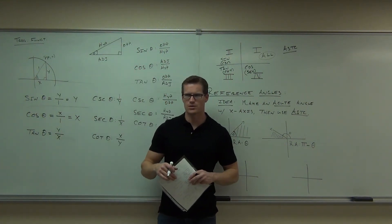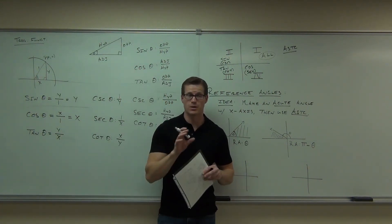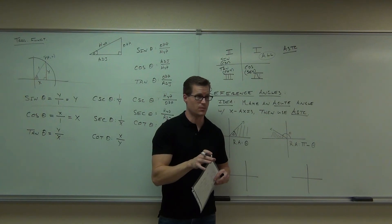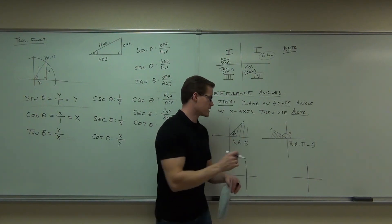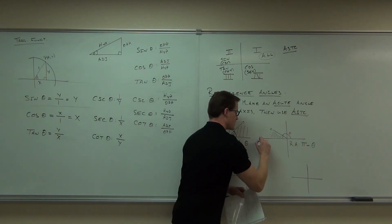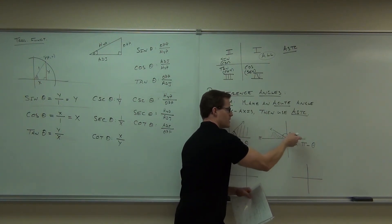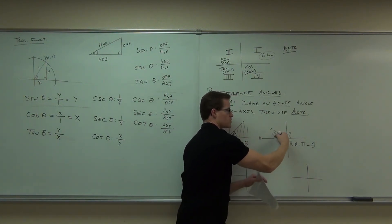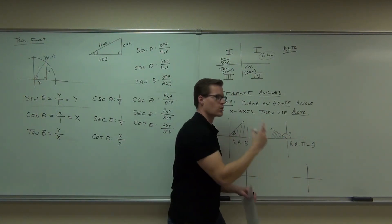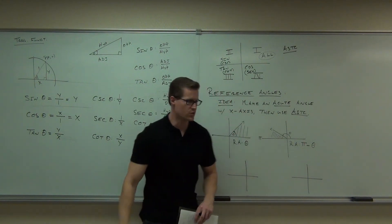Pi is coming from the fact that a straight angle measures pi. We're subtracting our angle from pi to get that shaded region between the terminal side and the x-axis.